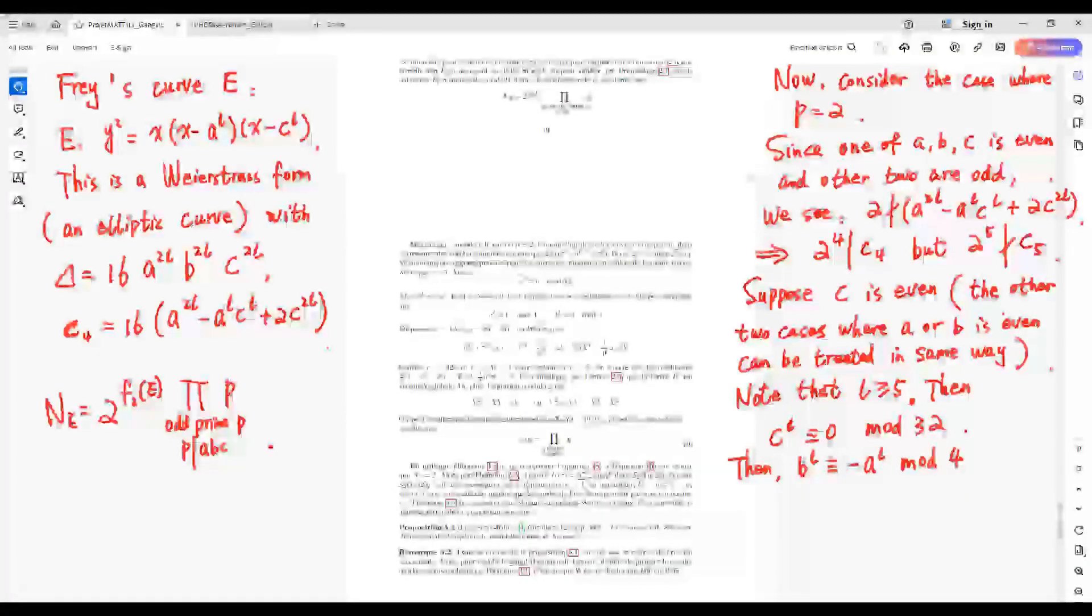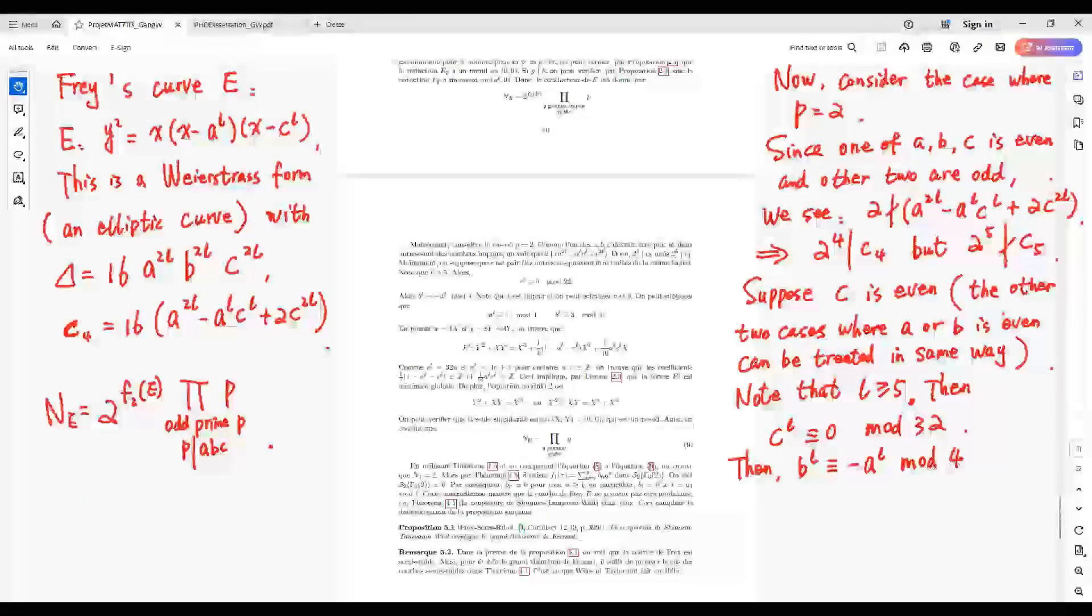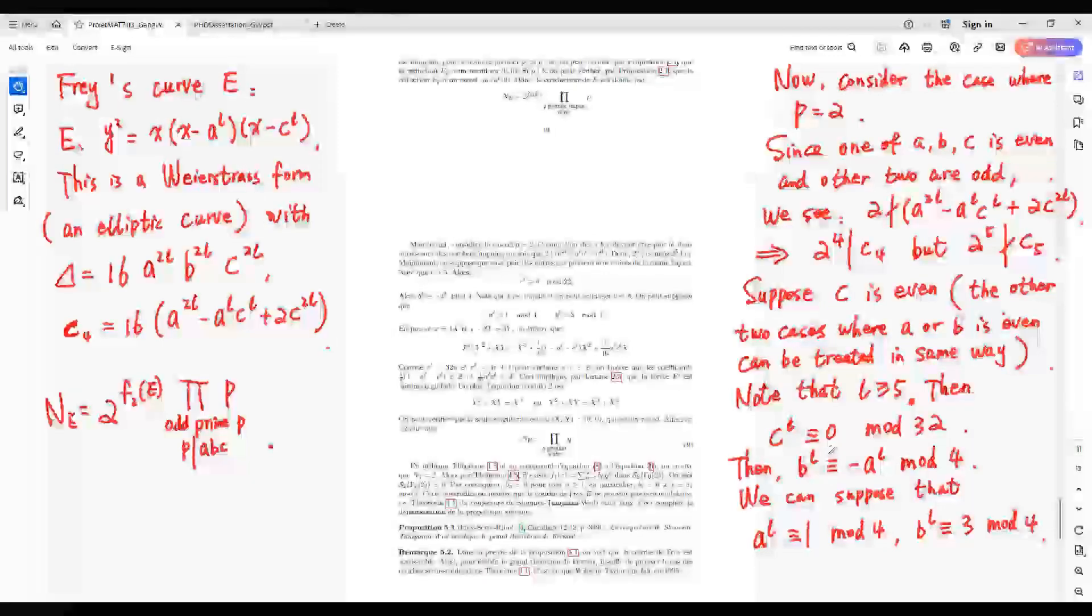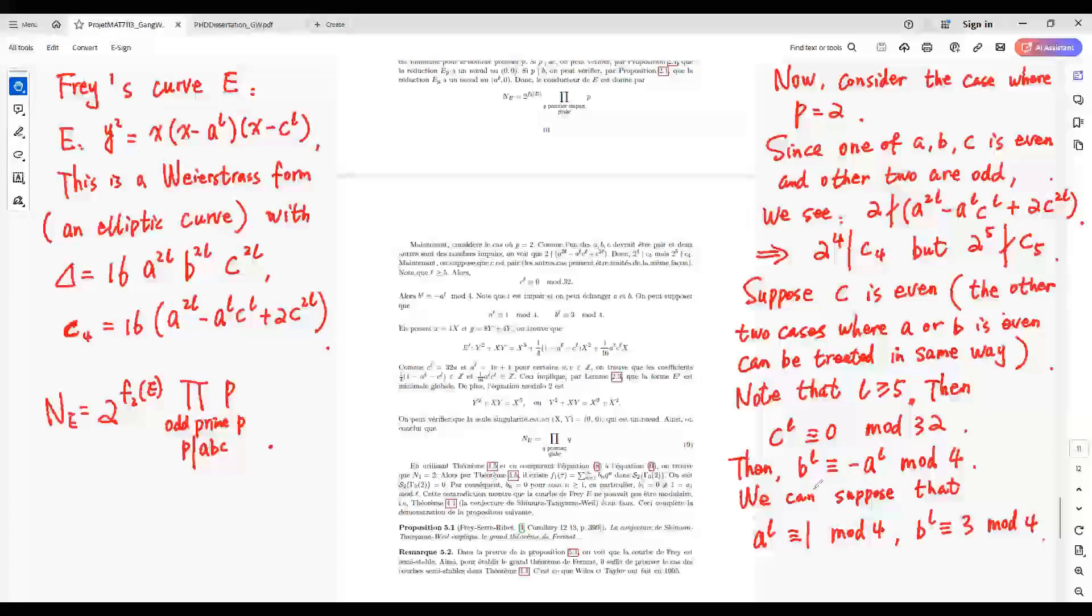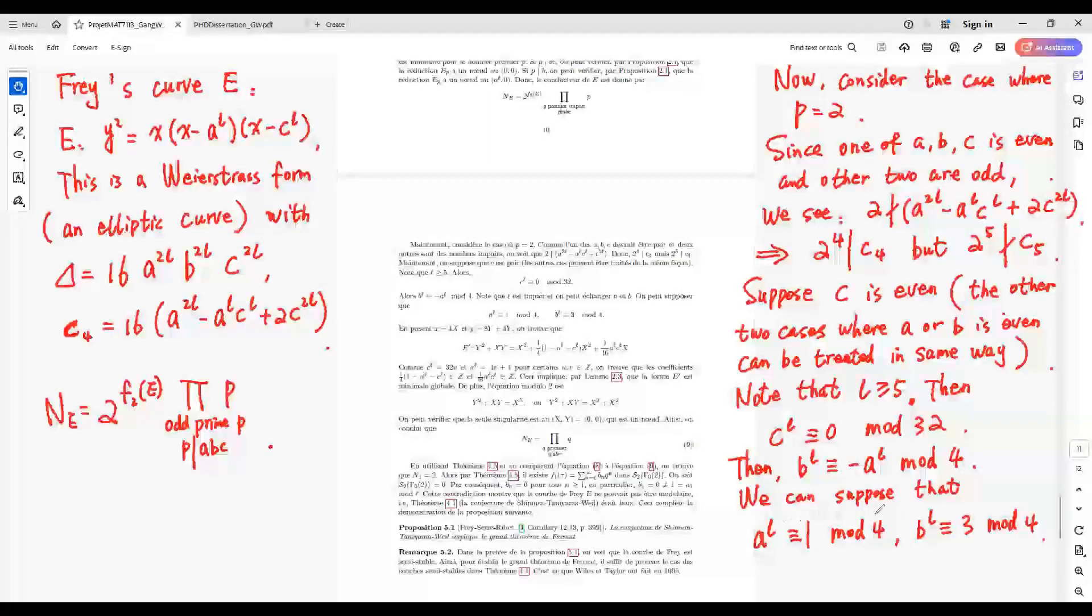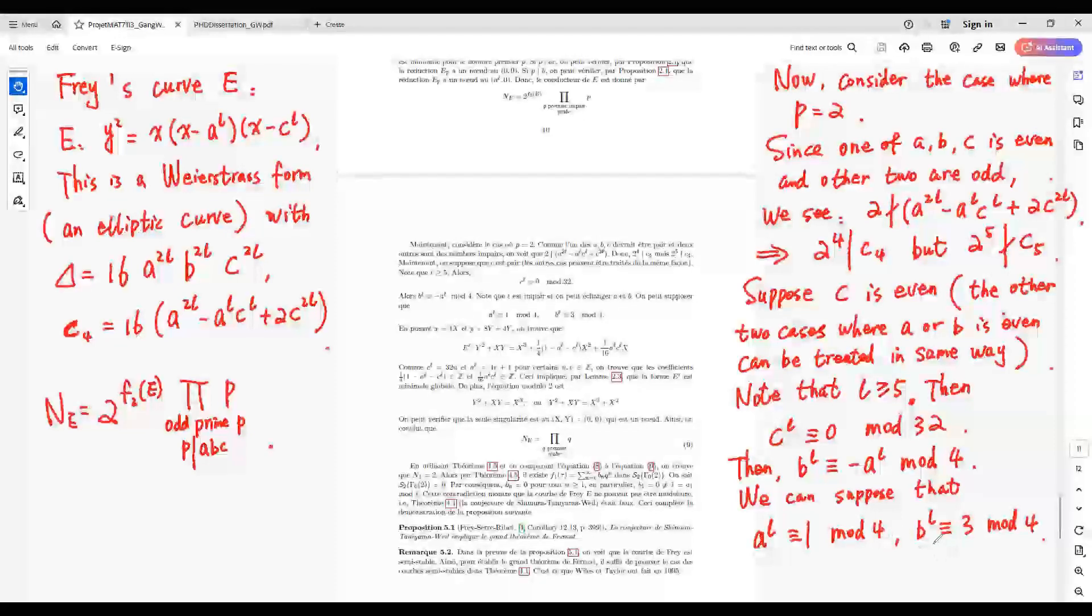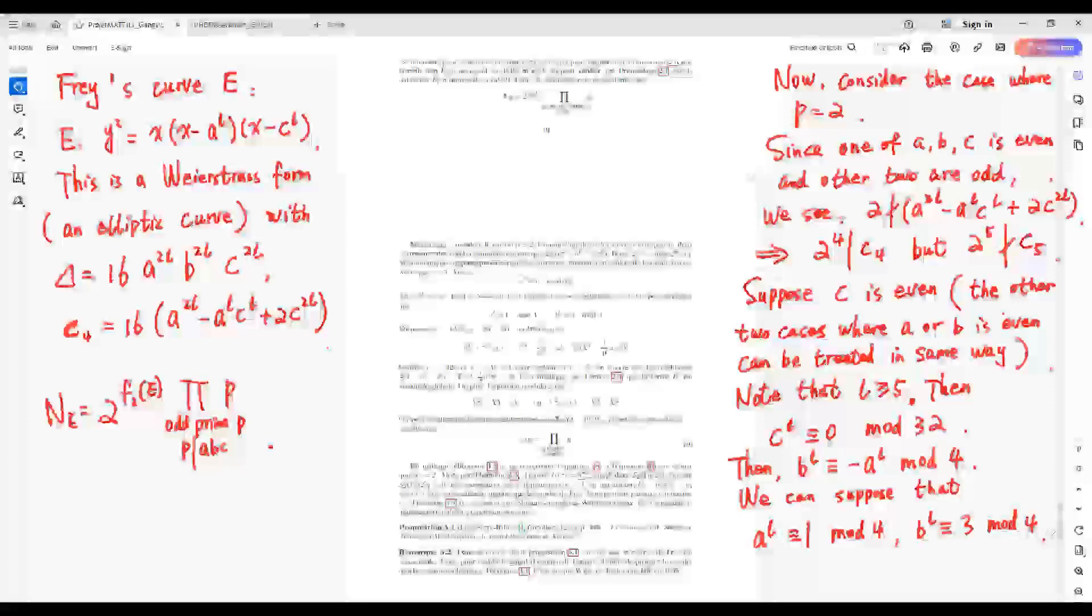From this one, we see B^L equals minus A^L modulo 4. Note that L is an odd number, and we can exchange A and B. So we can suppose that A^L equals 1 modulo 4 and B^L equals 3 modulo 4.